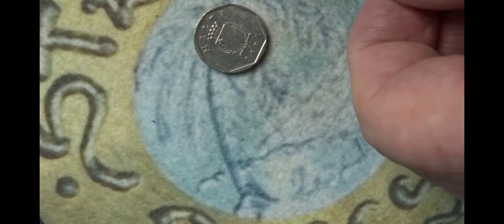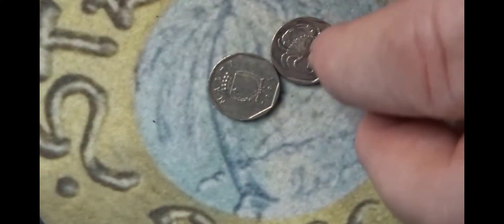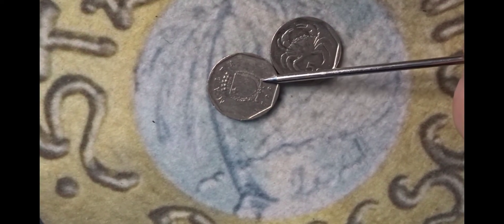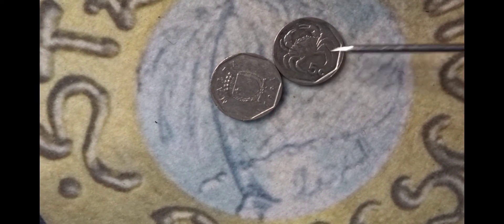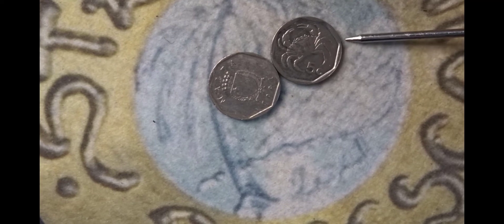Next I have two five cent coins from Malta. You have the name of Malta and the coat of arms on the front, and on the rear you have a freshwater crab with the value.